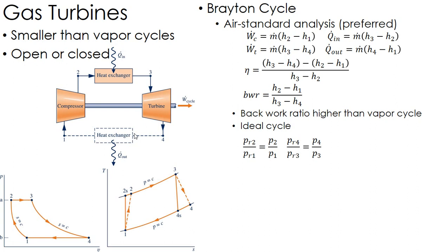For an ideal cycle - that is, isentropic cycles - the relative pressures are what we're going to be using to set our states in the table. For isentropic processes, PR2 over PR1 equals P2 over P1, same thing with four and three.